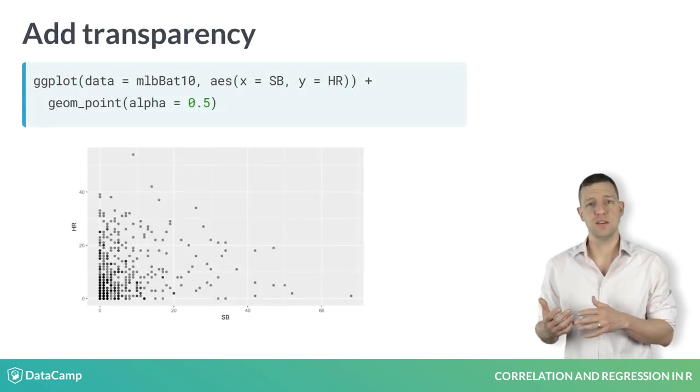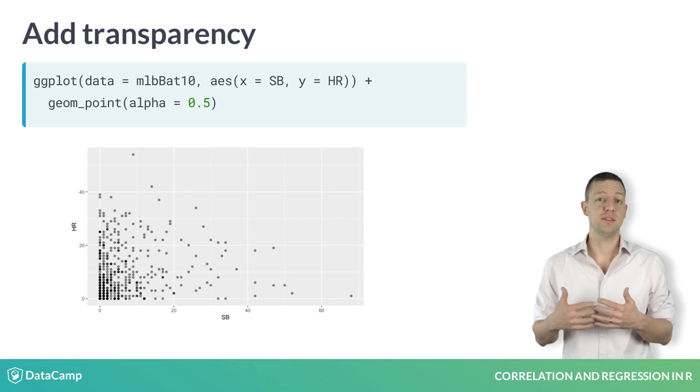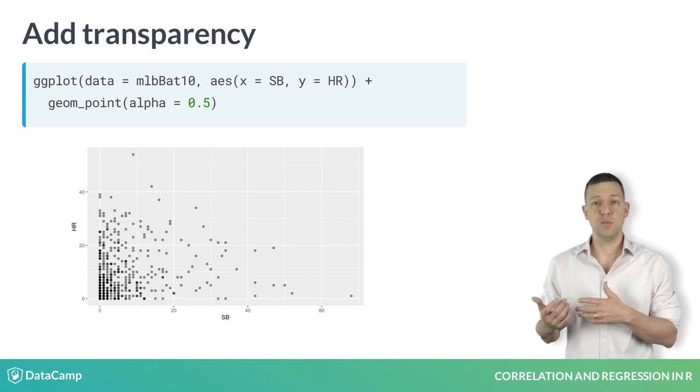To combat this, we can add an alpha transparency to the points, making them more translucent. Now we can see that the overplotting occurs where the darker dots are.